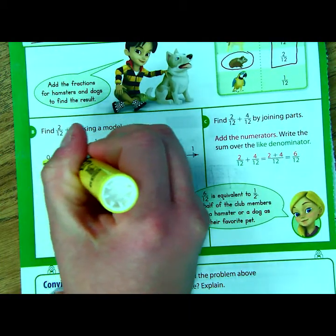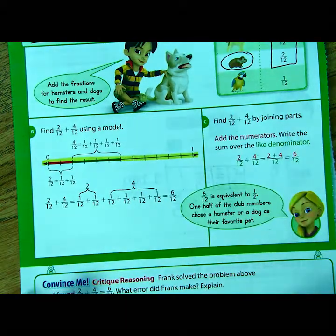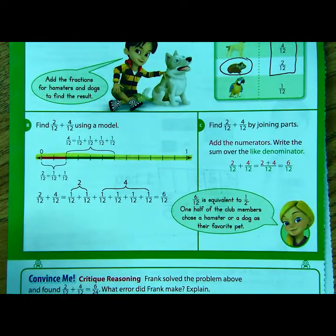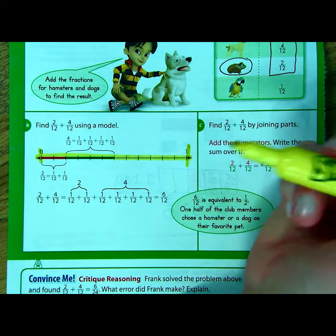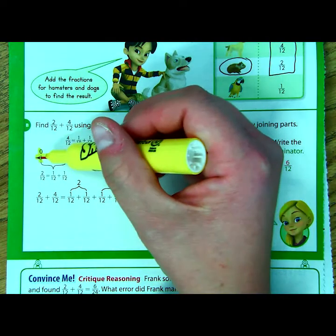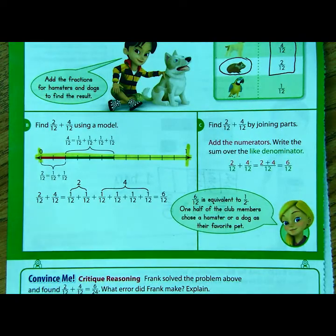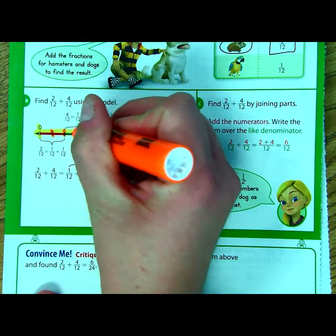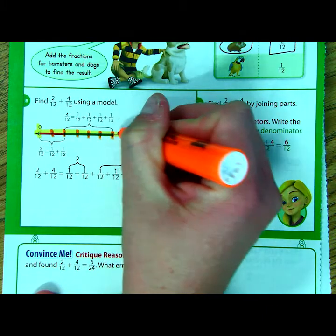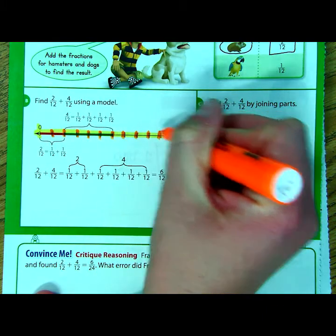So again, just like on Tuesday, I will point out that when you look at this number line, just so you guys don't get confused when you see it in the book in just a moment, you can see that from zero to one, so there's your model. Let's see how many equal parts they've divided it into. One, two, three, four, five, six, seven, eight, nine, ten, eleven, and twelve.